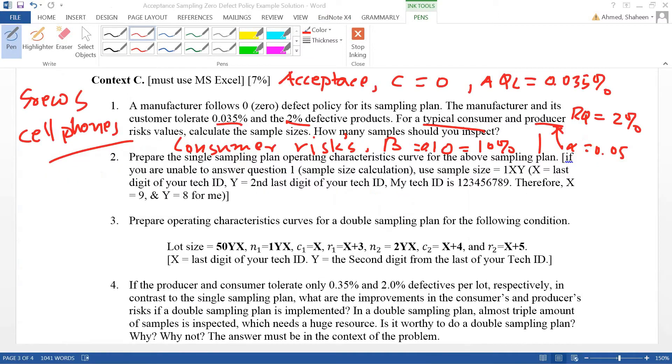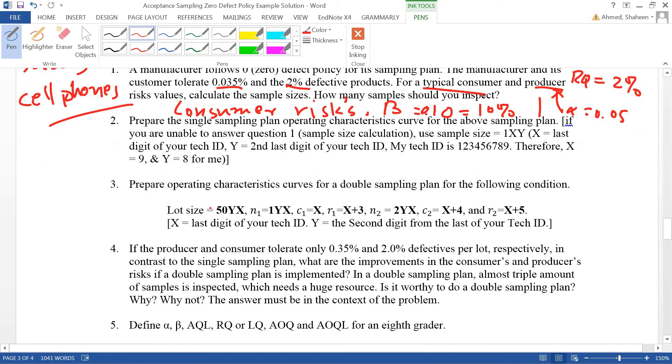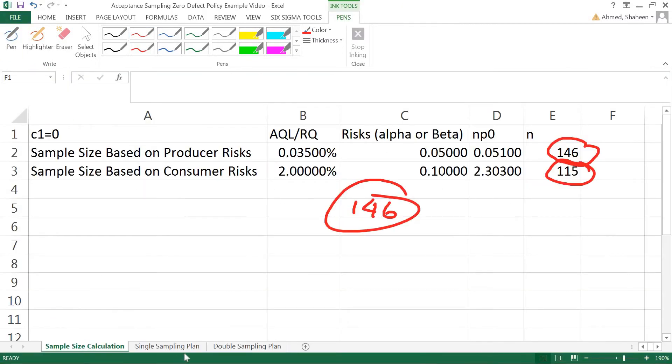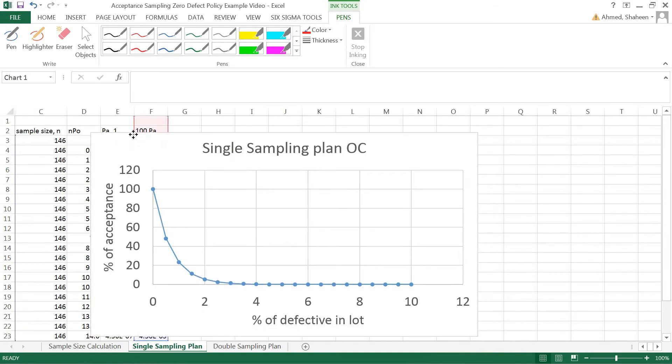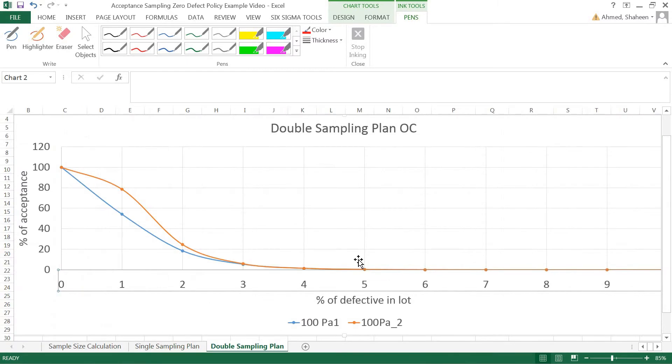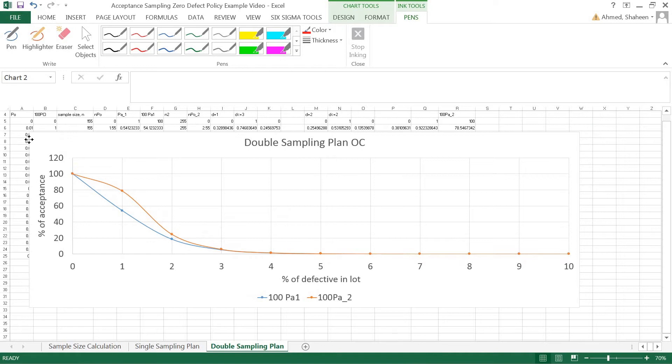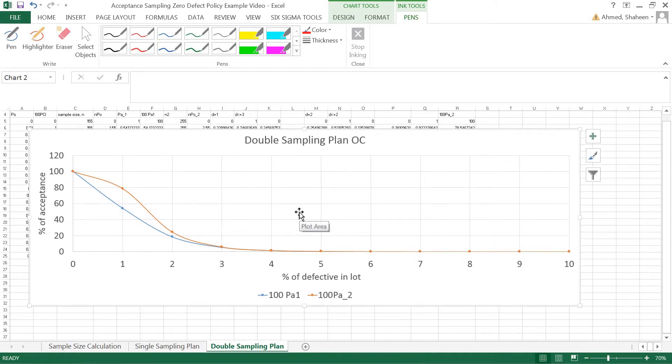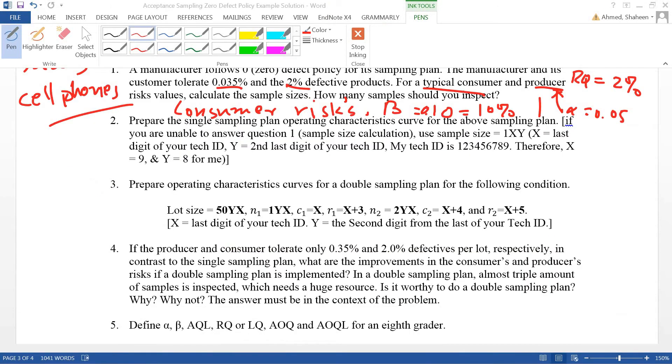The second question is asking to calculate and make a single sampling operating characteristics curve. I have prepared that already. If it doesn't look like this, check the video on how to make single sampling OC curves. The next question was asking to make a double sampling plan. Check the other videos on how to do that.